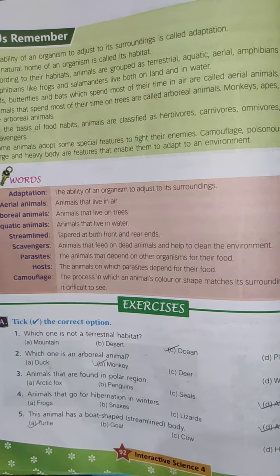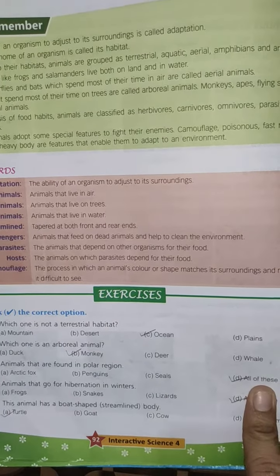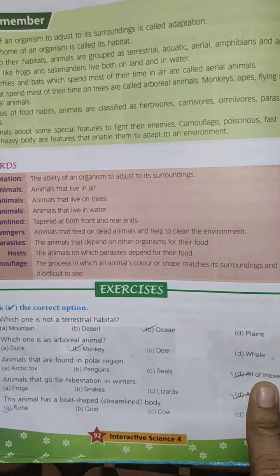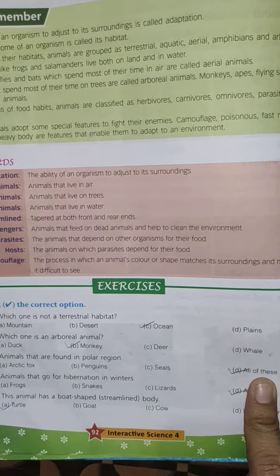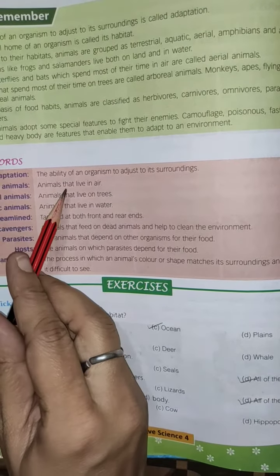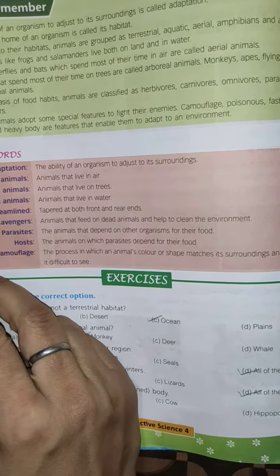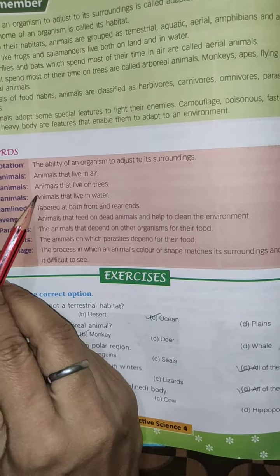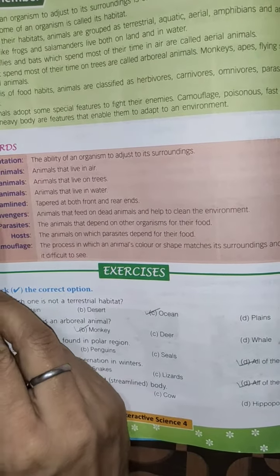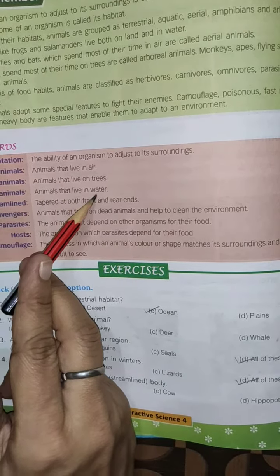Today we are going to do only the keywords. Adaptation: the ability of an organism to adjust to its surroundings is called adaptation. Aerial animals: animals that live in air. Arboreal animals: animals that live on trees. Aquatic animals: animals that live in water.